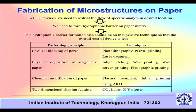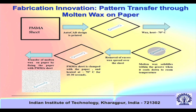There are various fabrication methods for microstructures on paper: physical blocking of pores, physical deposition of reagent, chemical modification, or two-dimensional shaping and cutting. Accordingly, available techniques include photolithography, PDMS printing, laser treatment, inkjet etching, wax printing, wax screen printing, flexographic printing, plasma treatment, inkjet printing, and others. The objective is either to block pores or make new structures on paper to direct liquid flow in a certain direction.